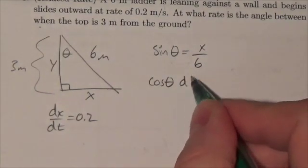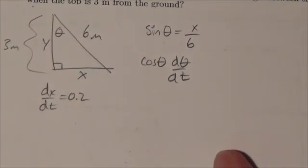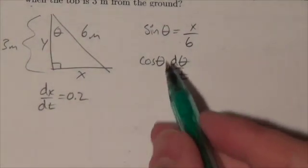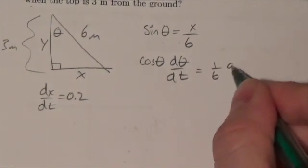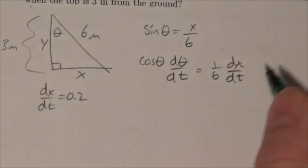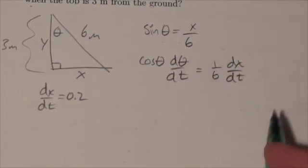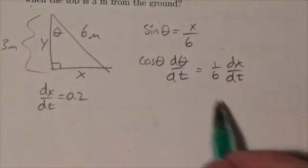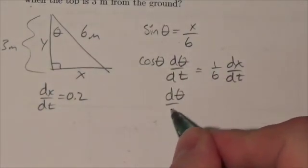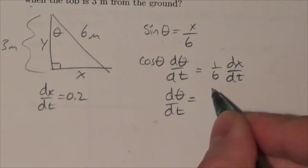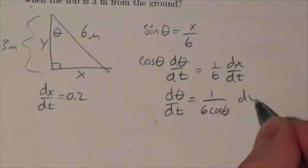But remember, I'm taking the derivative with respect to time here, and theta is a variable, so I have to do this implicitly. This is going to end up being 1 over 6 dx/dt. The nice thing is we know what dx/dt is. I'm looking for dθ/dt, so this is going to be dθ/dt equals 1 over 6 cosine of theta dx/dt.